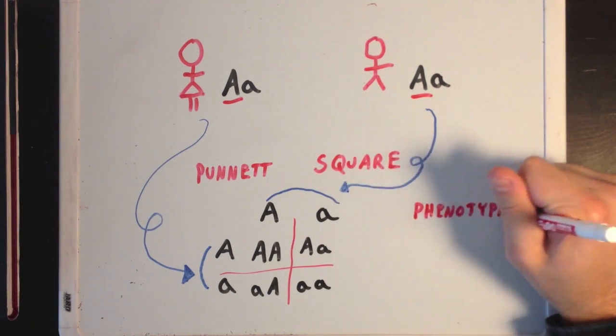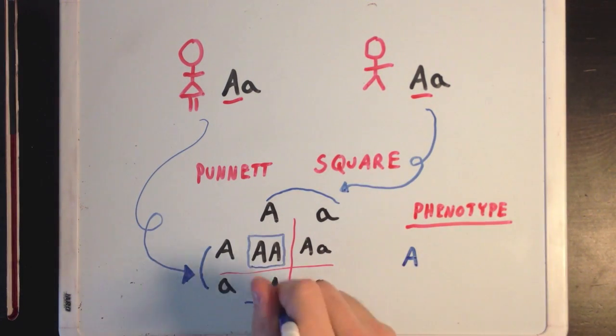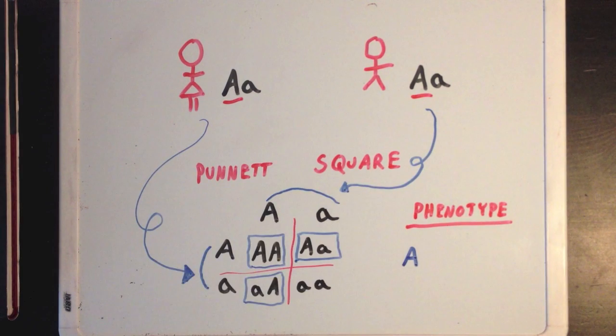If we want to take a look at offspring phenotype, we see that three of the four possible genotypes will lead to the dominant phenotype for gene A, whereas only one of the four possible genotypes will lead to the recessive phenotype for gene A.